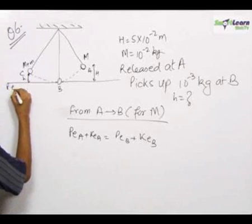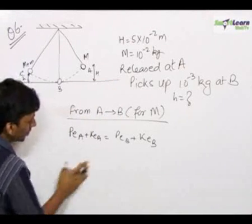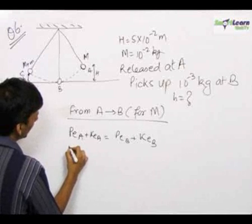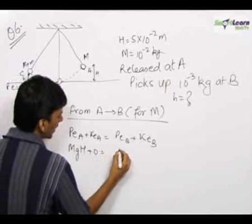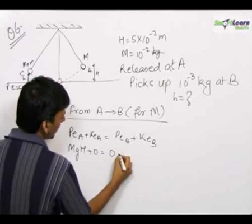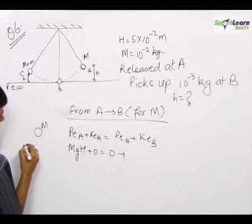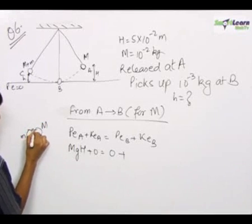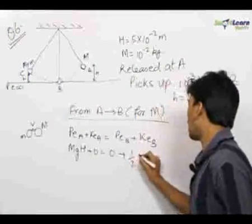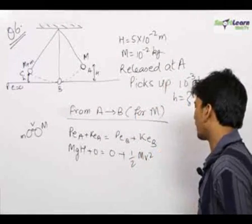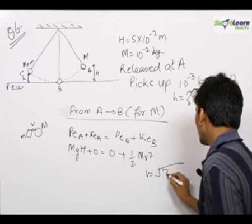Let us take potential energy equal to 0 at the level of B for simplicity. Therefore, potential energy at A equals mgh, and kinetic energy initial was 0. This equals potential energy at B, which is 0, plus kinetic energy at B. Let the mass m come down to level B with velocity v. Therefore, mgh equals half mv squared, and cancelling m we get v equals root over 2gh.